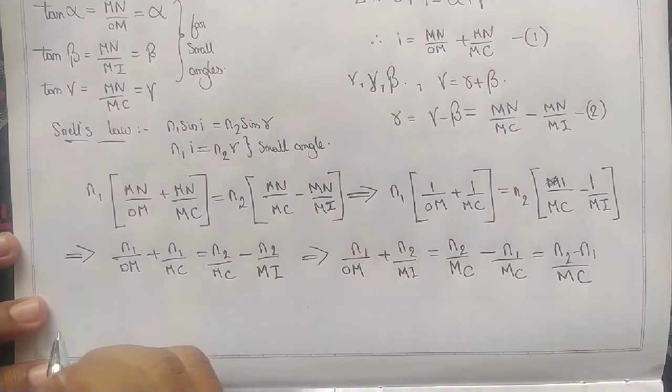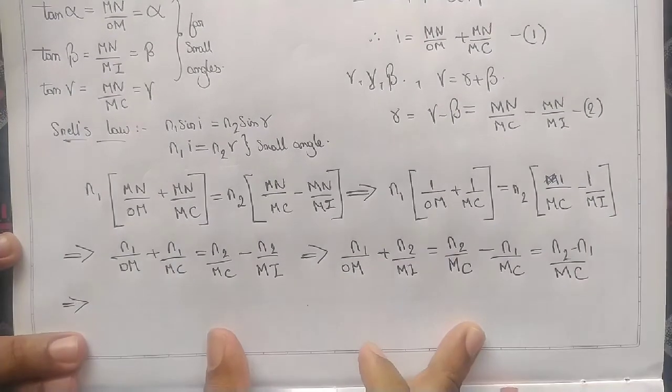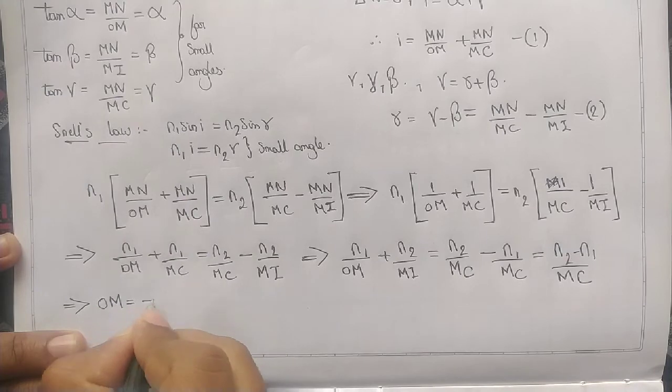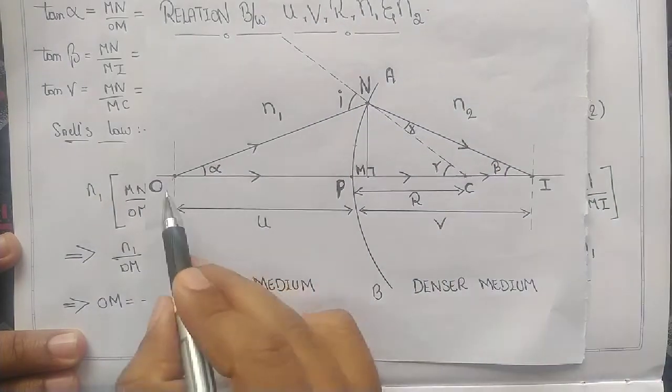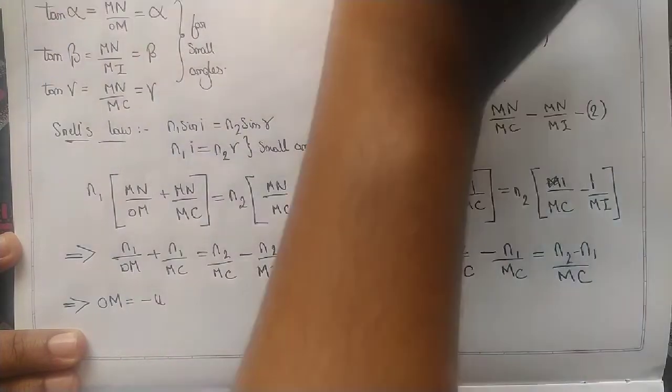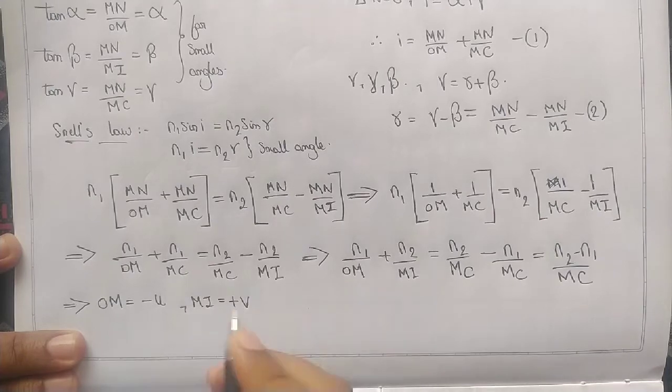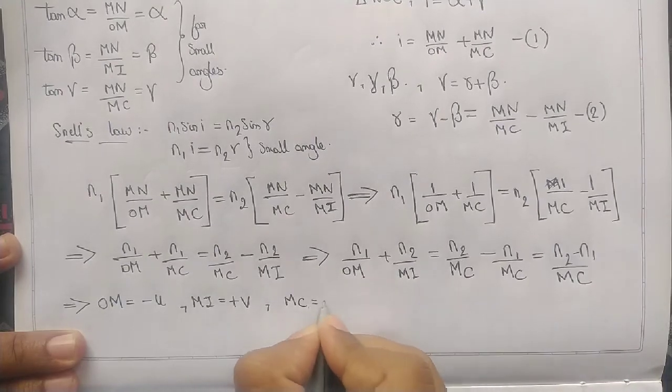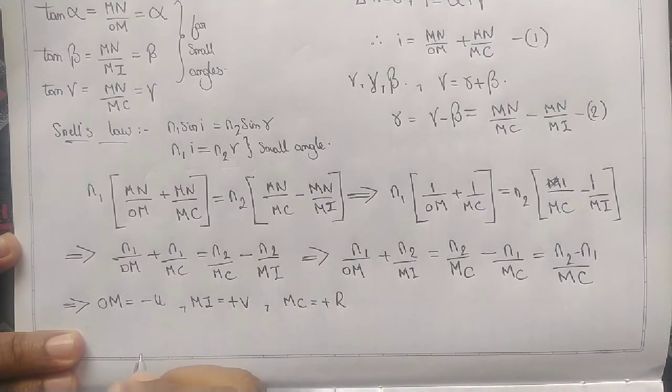We are almost done. Now we are supposed to take what is OM. OM is minus U - minus because OM is behind the convex surface. According to sign convention, we took minus U. MI is plus V because the image is on the right side, in front of the surface. MC equals plus R because the radius of curvature is also in front of the surface.